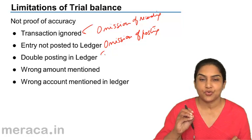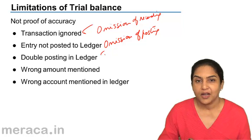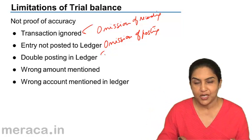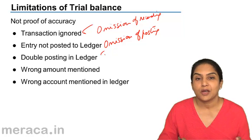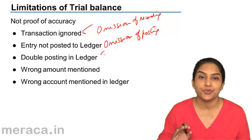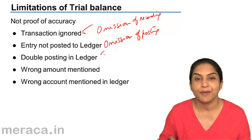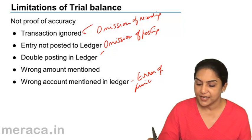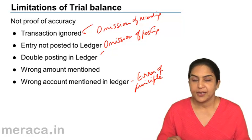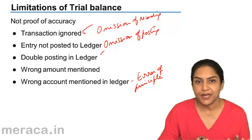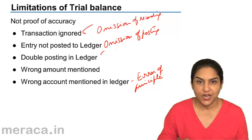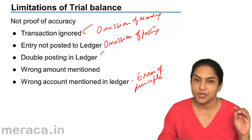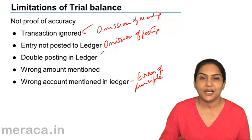For example, if we pay wages to a person to work on installation of our machinery, those wages are supposed to be added to the cost of the machinery and debited to the machinery account. But suppose instead those wages are debited to the wages account — this is an error of principle. Since an account has been debited, the error is not reflected in the trial balance. The machinery account balance is wrong, the wages account balance is wrong, but the trial balance will agree.